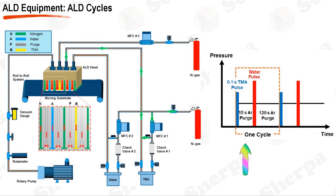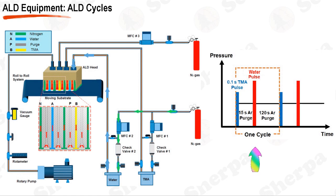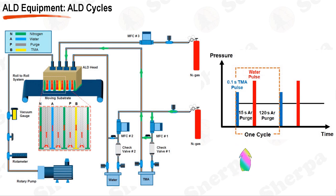During the purge, the system bypasses the canister and purges the supply line to remove residual precursors and byproducts. Next, water is introduced as the second precursor in a similar fashion. The water is bubbled in its own canister and then introduced into the deposition chamber where it reacts with the TMA-covered substrate. This reaction typically forms an aluminum oxide film on the substrate, while releasing methane as a byproduct. Following the water introduction, another purge phase occurs to clear the system of any leftover water and reaction byproducts. This entire process, from the TMA introduction to the final purge, constitutes one ALD cycle.